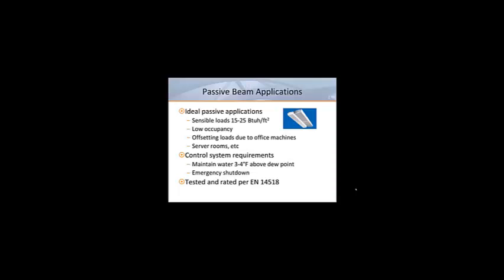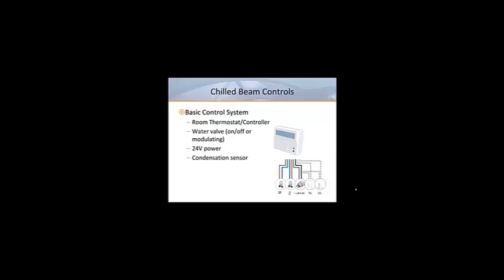Now let's take a look at the controls required to operate chilled beams. Each zone will require a thermostat or room controller with a room temperature sensor. It will be powered by 24 volts AC. This controller will have output capability to operate water valves to control cooling and or heating in the case of an active beam. The valves could either be two position on-off valves or 0 to 10 volt DC modulating valves. While on-off valves should be adequate for the purpose of controlling chilled beams, it is best if they open and close slowly.